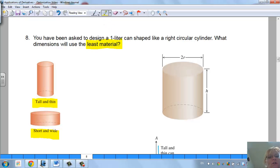You've been asked to design it but you want to use the least material. So when they're talking least material, you're talking about the outside or the surface area of this right circular cylinder.